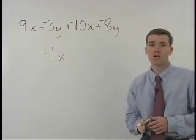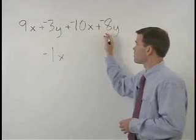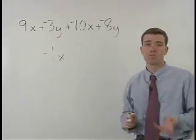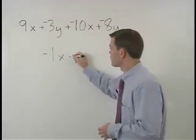Now let's combine our y terms. Negative 3y plus negative 8y simplifies to negative 11y.